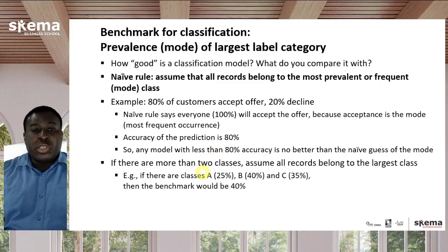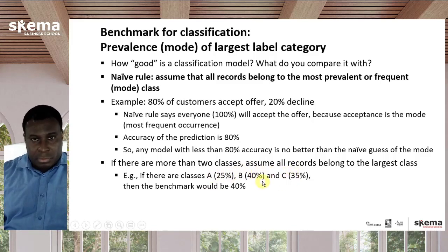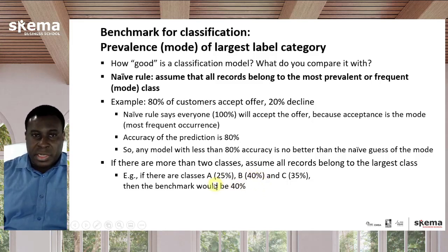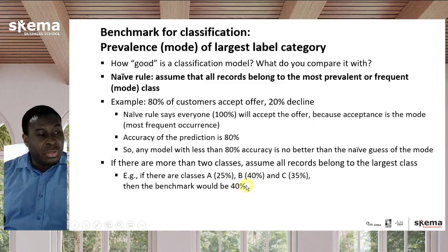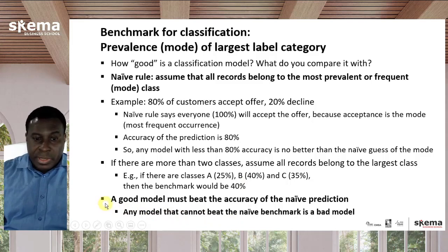Now if you have a scenario where you have more than two classes, you always pick the prevalence or the frequency of the largest class. For example, if you have three classes with class A at 25%, class B at 40%, and class C at 35%, then you say everyone picks B. If everyone picks B, then 40% of the time you're going to be correct and you need a model that beats 40%. So whatever the split is, you predict the most frequent class and that percentage becomes your benchmark. A good model must beat the accuracy of the naive prediction; any model that cannot beat the naive prediction is a bad model.